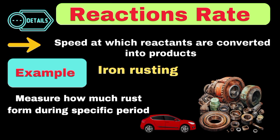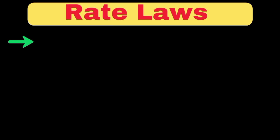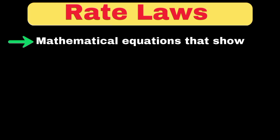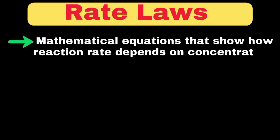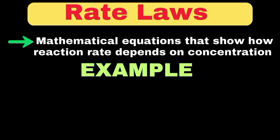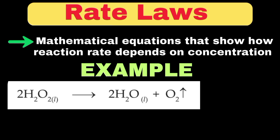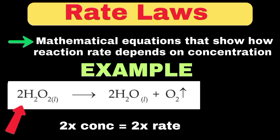Now we will move toward rate laws. Rate laws can be defined as mathematical equations that show how the reaction rate depends on the concentration of reactants. Let's take the example of hydrogen peroxide decomposing into water and oxygen. The rate of this decomposition depends on the concentration of hydrogen peroxide — doubling the concentration might double the rate.